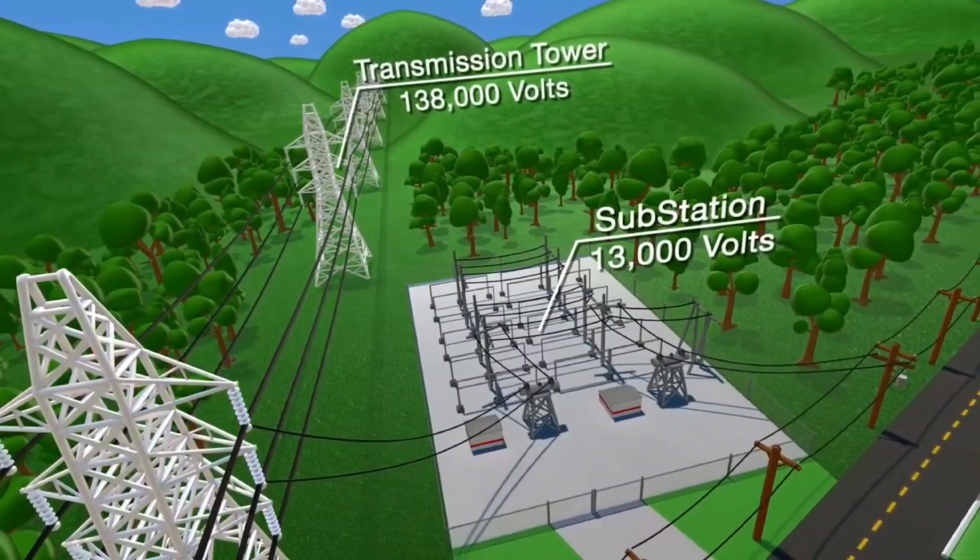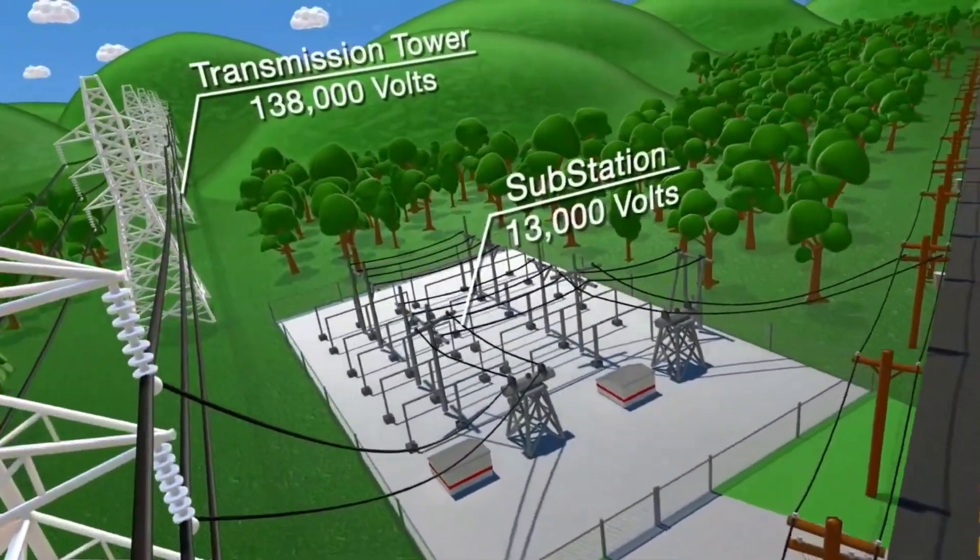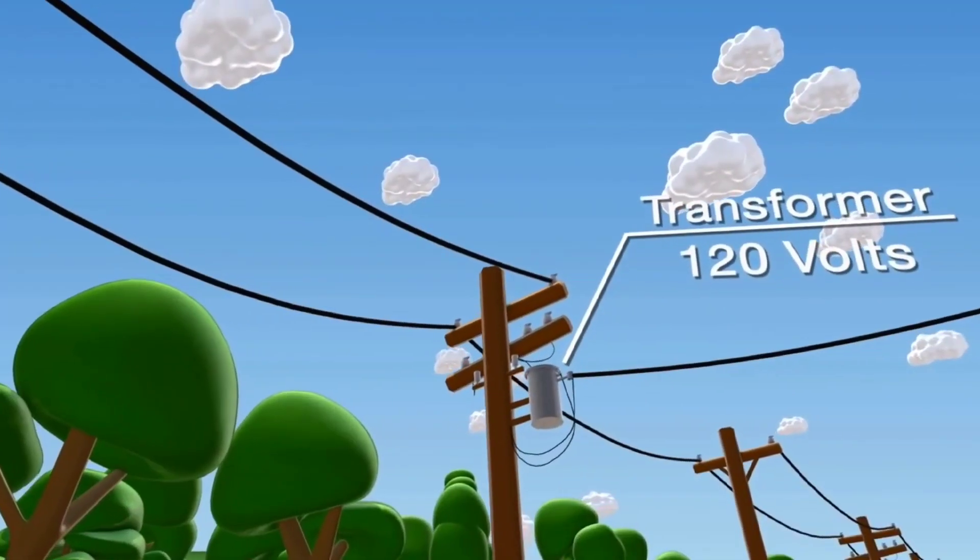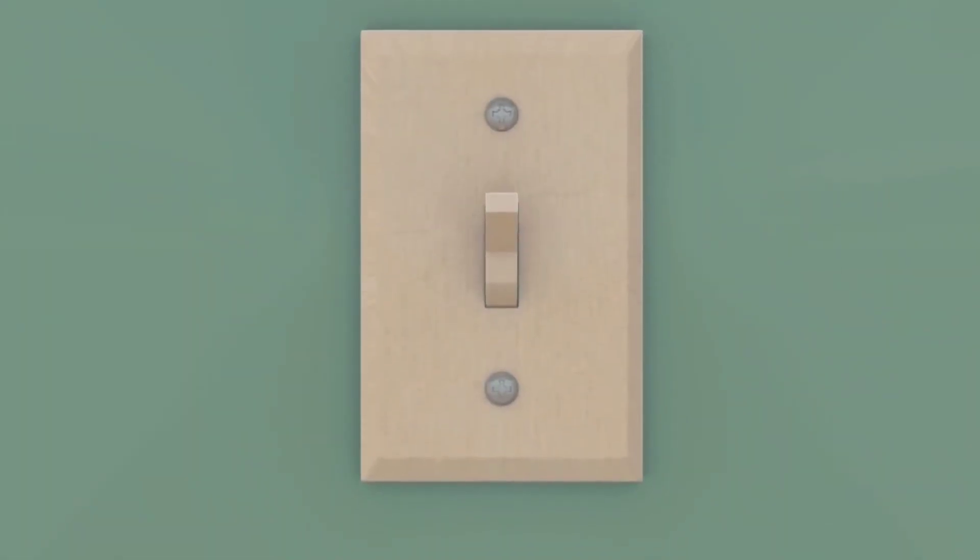Within the substation, transformers convert electricity from high voltages to lower voltages, which can then be delivered safely to electricity consumers.